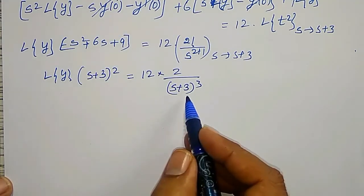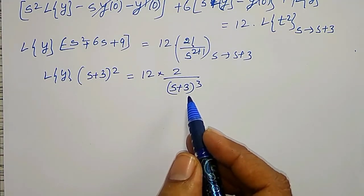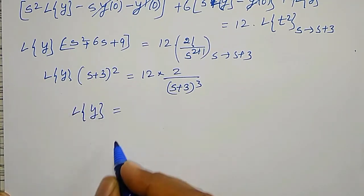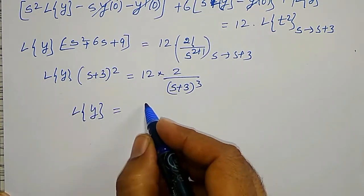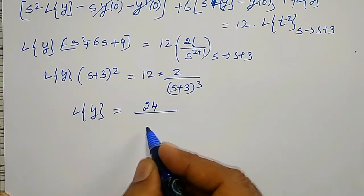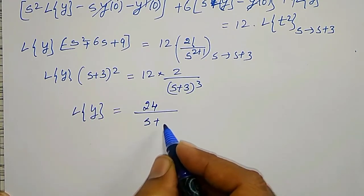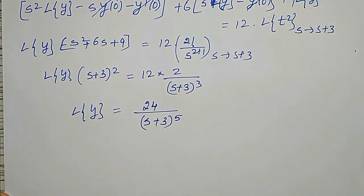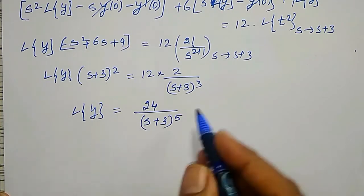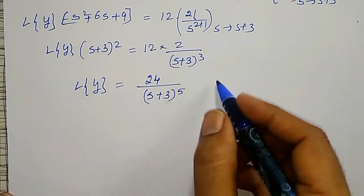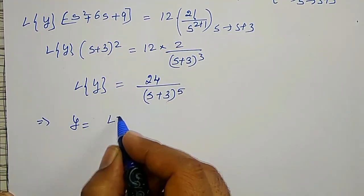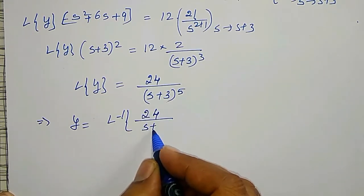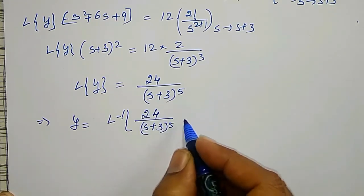Shifting (s+3)² to the other side, my total Laplace Transform of y becomes 24 divided by (s+3) raised to the power 5.